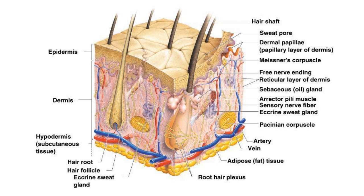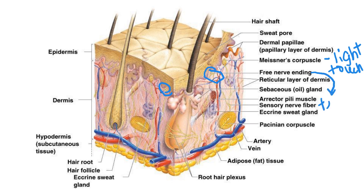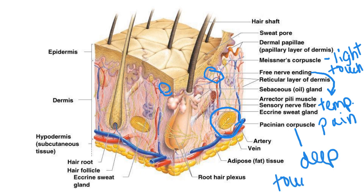Some of the sensory receptors you'll need to know: Meissner's corpuscles, which are for light touch. Free nerve endings, which are sensitive to temperature and pain. And Pacinian corpuscles — these big structures that are important for deep pressure, deep touch, and vibration.